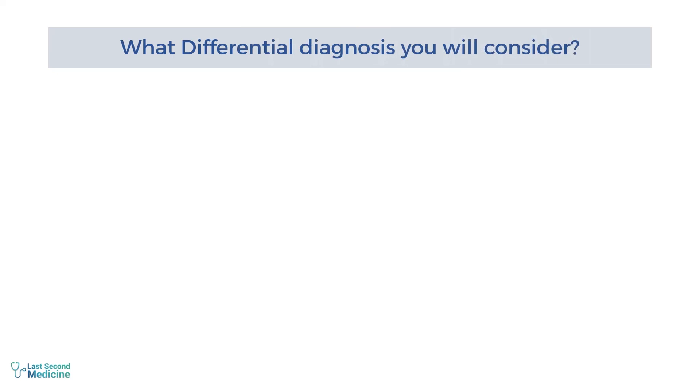What differential diagnosis would you consider? Hypertrophic cardiomyopathy and aortic sclerosis.